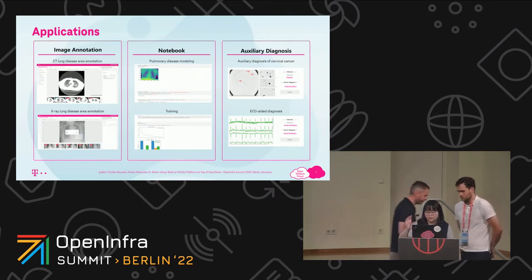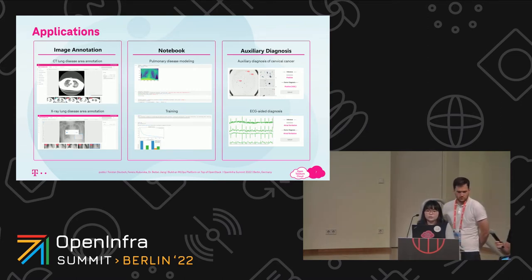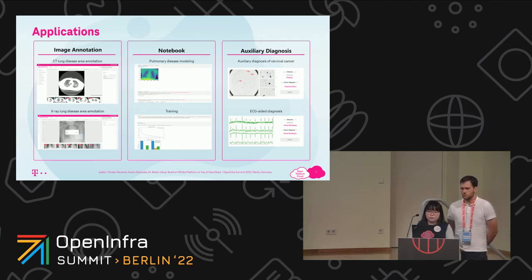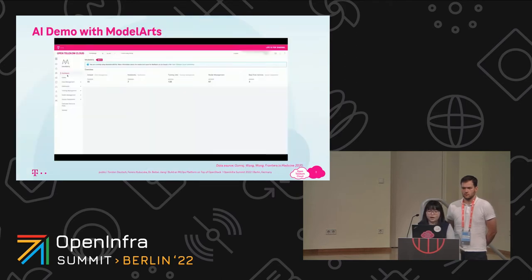Thanks, Torsten. As Torsten has mentioned, Model Arts is an AI platform for AI lifecycle management. It can be used for image annotation — for example, marking critical factors in medical images. It can also be used for algorithm development and model training via the notebook instance service, as well as further developing AI products — for example, auxiliary diagnosis for COVID-19 and for cervical cancer. We have shown that Model Arts covers several sections. Today, I will mainly focus on case three, which is the auto learning part. In Model Arts, we call it XML.